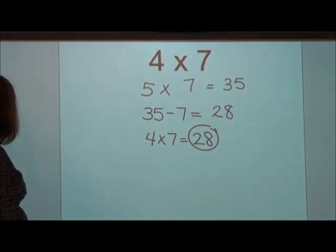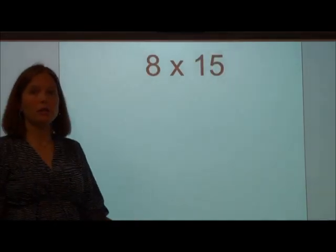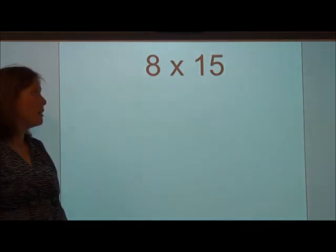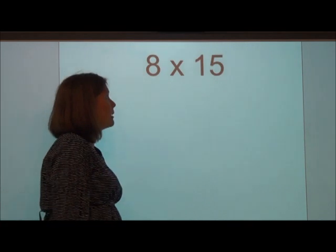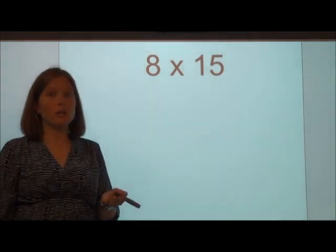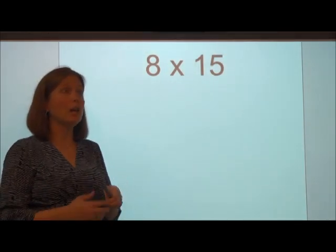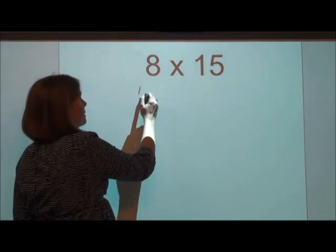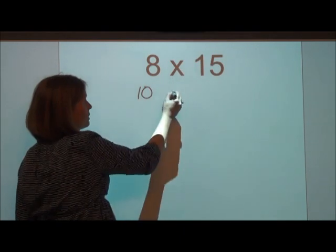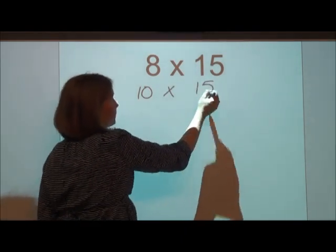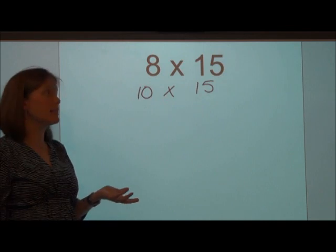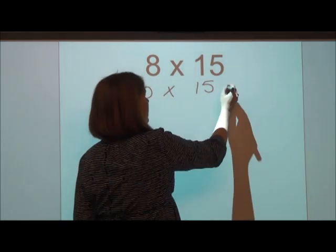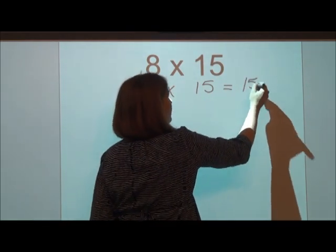Let's say though, we're working with a much more difficult equation. We have this time 8 times 15. So we have 8 groups of 15. Well, that 8 is still pretty close to 10. We just have to add 2 groups of 15 to it. That's going to give us 10 groups of 15. Now, 15 times 10 is a lot easier than 8 times 15. I can multiply those together and get the product of 150.